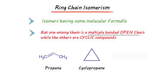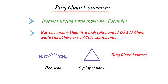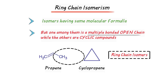The first one is a multiple-bonded open chain system while the other is a cyclic system. As they have the same molecular formula, they happen to be ring-chain isomers. Ring-chain isomers can be thought to arise because the open-chain unsaturated system and the cyclic system are double bond equivalents of each other. The unsaturated propene has been transformed into a cyclopropane system.